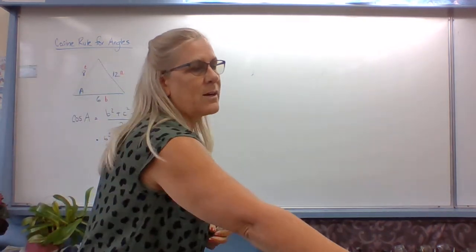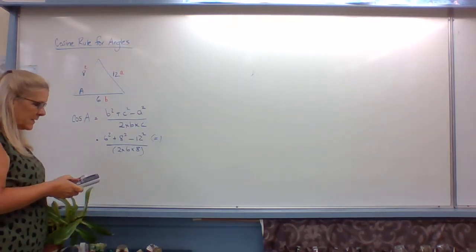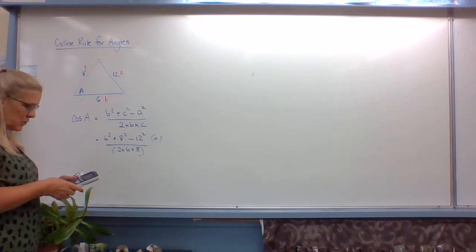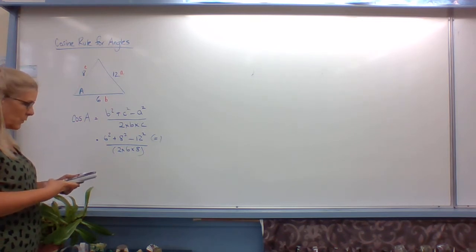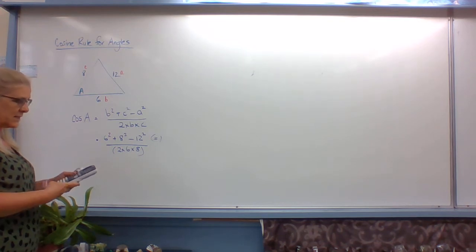So we're going to write into our calculator: 6 squared plus 8 squared minus 12 squared equals, divided by, bracket 2 times 6 times 8, close bracket, equals.